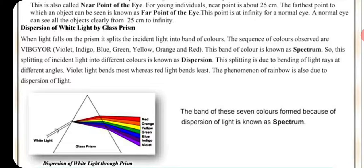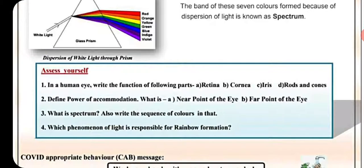This splitting is due to the bending of light rays at different angles. Violet light bends the most whereas red light bends the least. The phenomenon of rainbow is also due to dispersion of light. The band of these seven colors formed because of the dispersion of light is known as the spectrum.